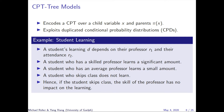A CPT tree model encodes a CPT over a child variable x and its parents π. It exploits duplicated conditional probability distributions to encode the CPT more concisely. Consider the example of a student's learning: a student's learning depends on their professor and their attendance. A student who attends class and has a skilled professor learns a significant amount, while a student who attends class with an average professor learns a small amount. A student who skips class does not learn at all, so the skill of the professor has no impact on their learning. It is said that the student's learning is contextually independent of the skill of the professor, given the context that the student skips class.